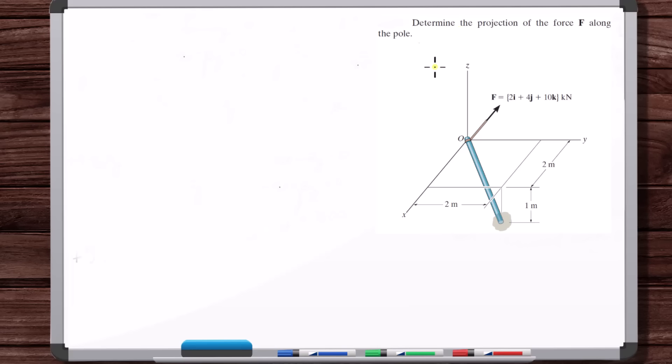Determine the projection of the force F along the pole. So this is interesting. We've got this force here. What's the component of this force in this direction? How do we do this?